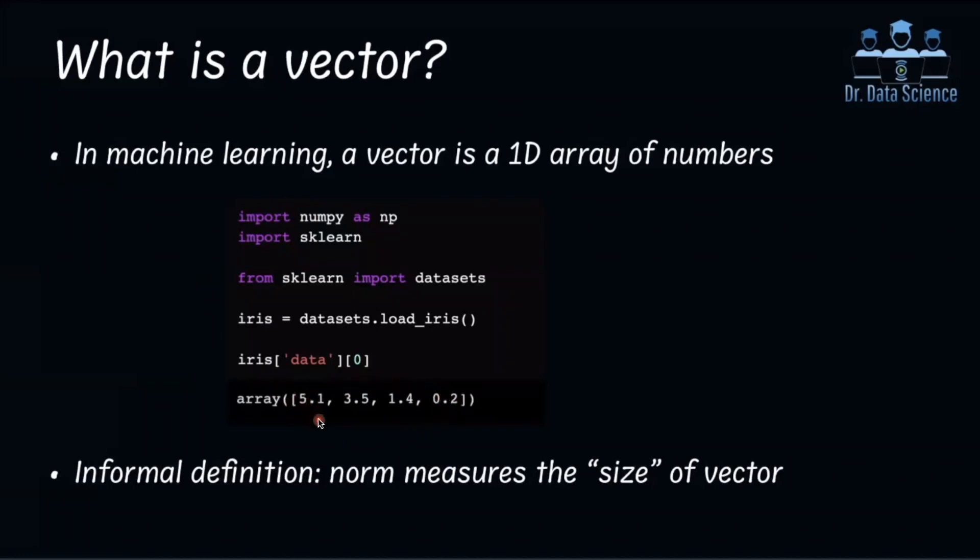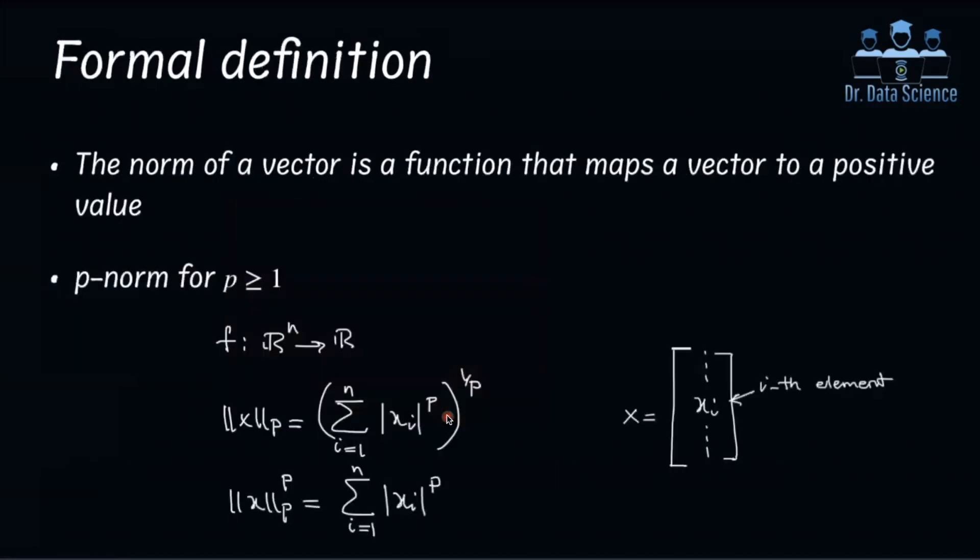And now the informal definition of norm is that norm measures the size of vector. So you want to summarize these four numbers using a single number. So let's move on to the formal definition of norm.